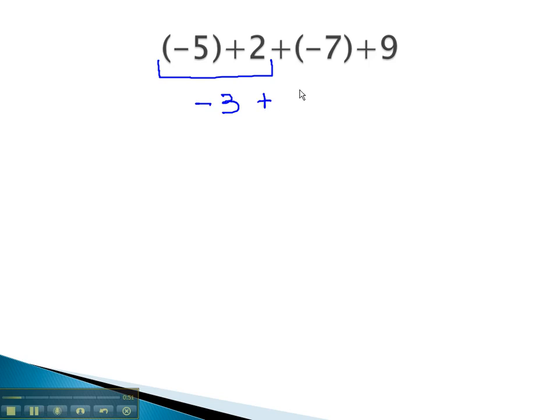The rest of the problem is still + (-7) + 9. Still working from left to right, we're doing (-3) + (-7). Both these numbers are negatives, so we have lots of negatives together. Keep the negative, and how many negatives are together? 3 + 7 is 10.